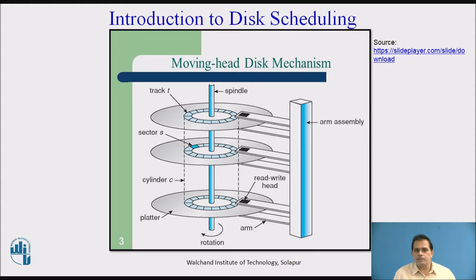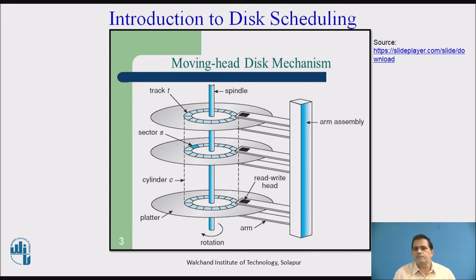A platter is like a CD and on the CD there is a surface. There are two surfaces: upper surface and lower surface. On the upper surface there are circular lines called tracks, and on the tracks there are sectors. When the operating system stores data in memory, it is stored in the sectors, and when data is fetched, it is fetched from the sectors.